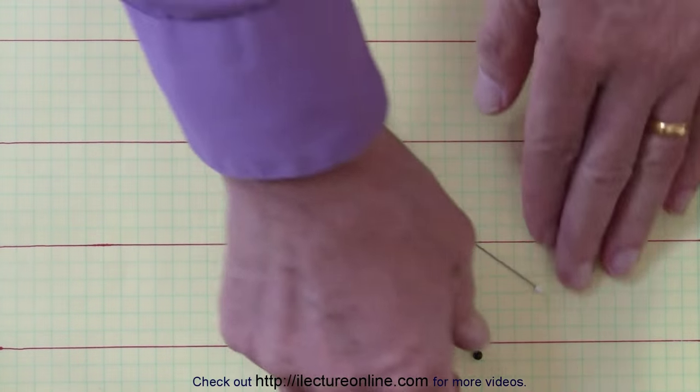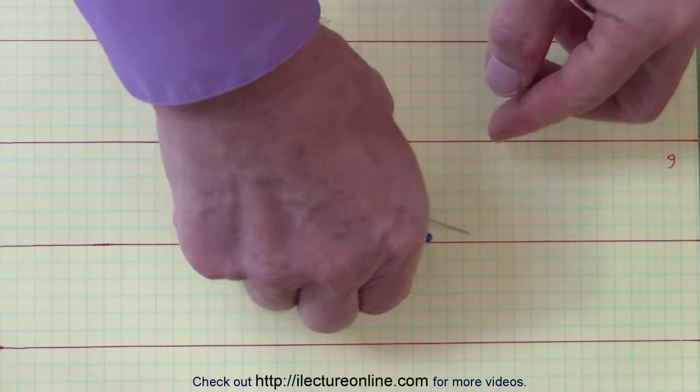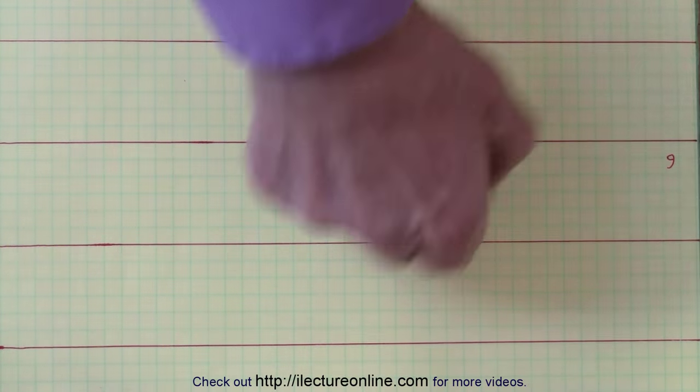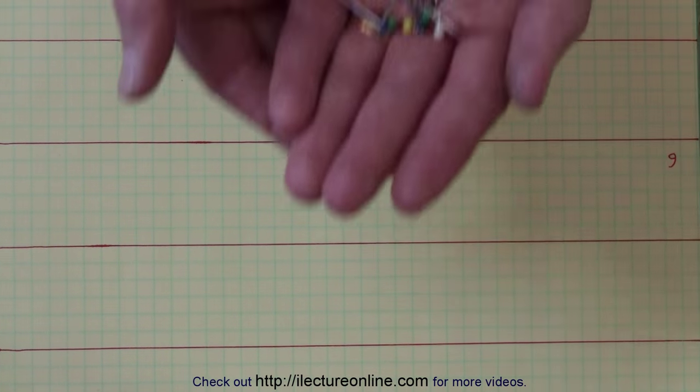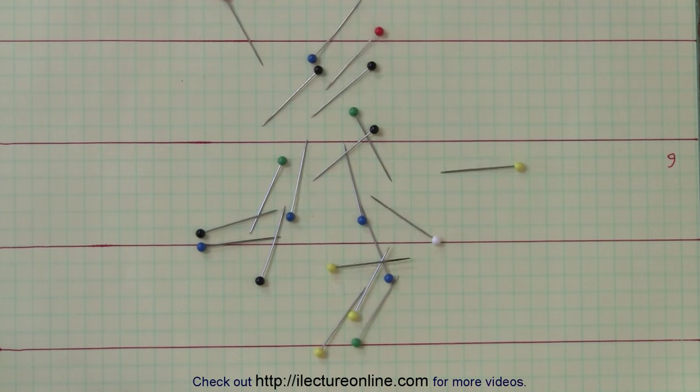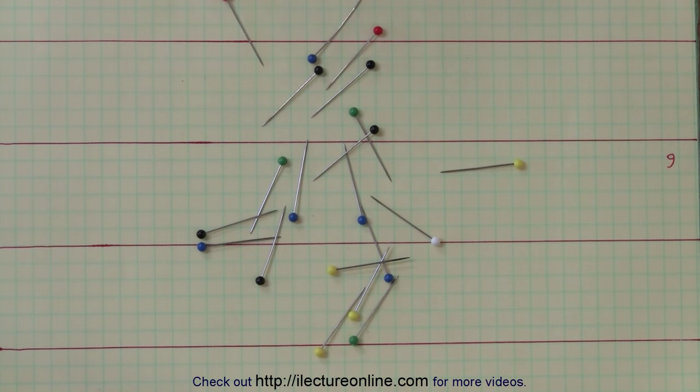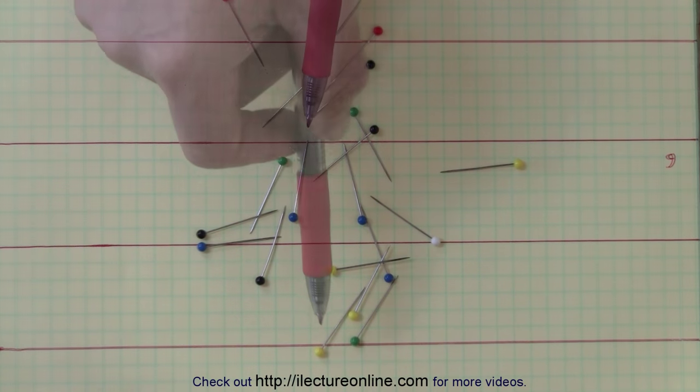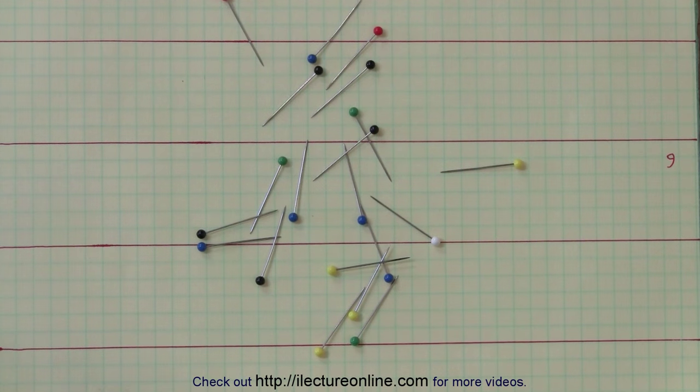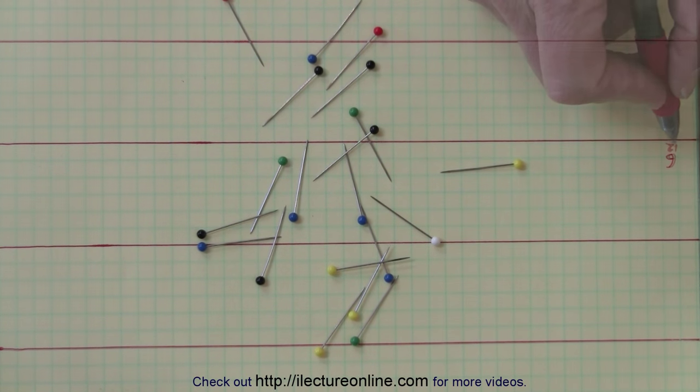Now we're going to throw 20 needles down. And hopefully the more needles we throw down, the more accurate we can estimate the number pi. We have 1, 2, 3, 4, 5, 11, 12 needles out of 20. So I'll put down 12.